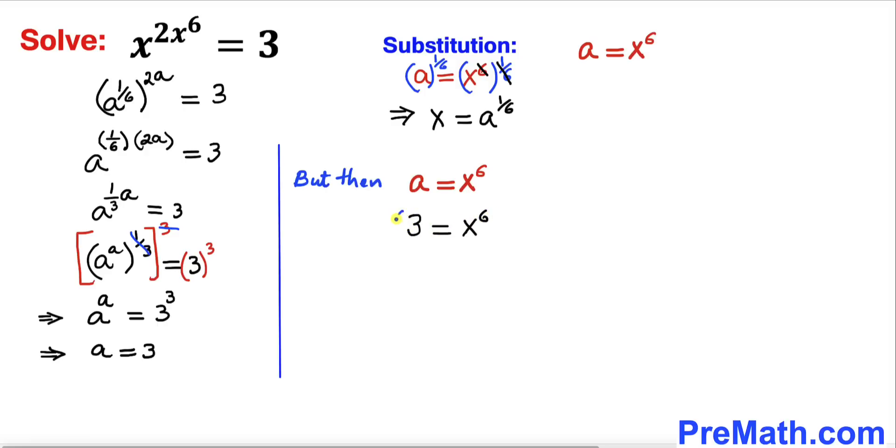Now let's go ahead and take power 1 over 6 on both sides on this side and on this side as well to isolate x. And here we can see this 6 and 1 over 6 they cancel each other out.